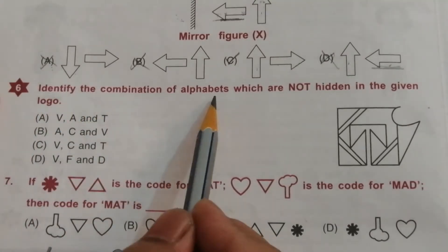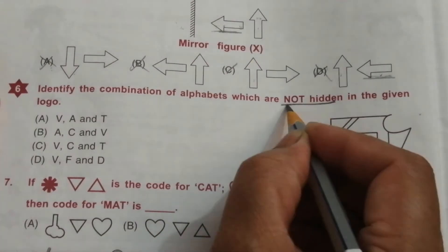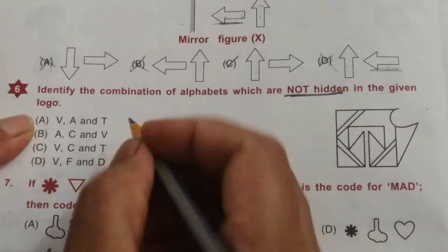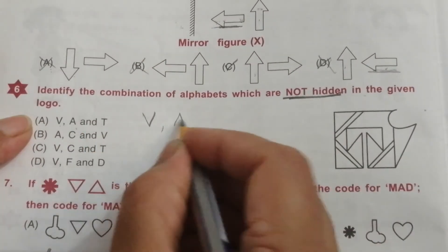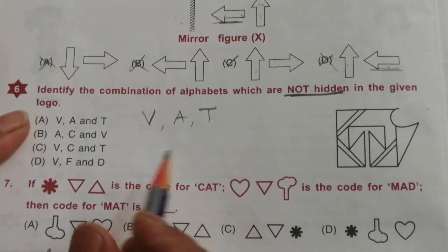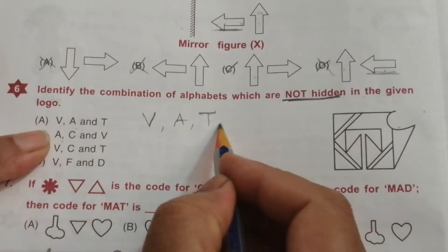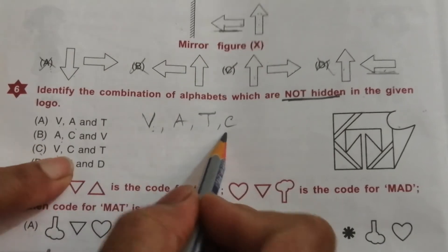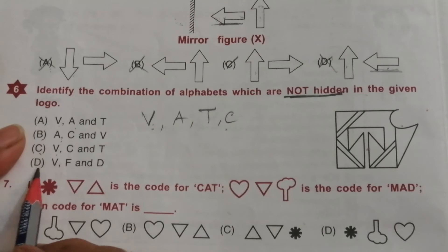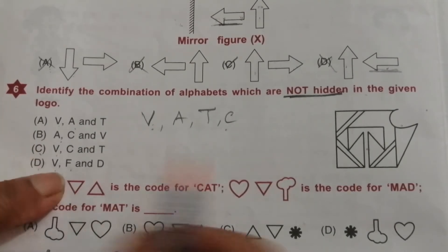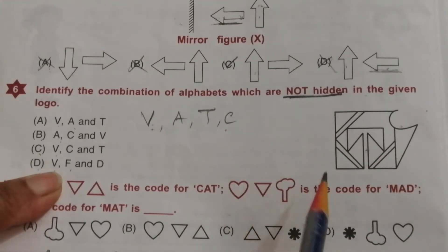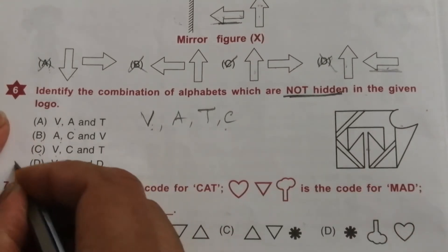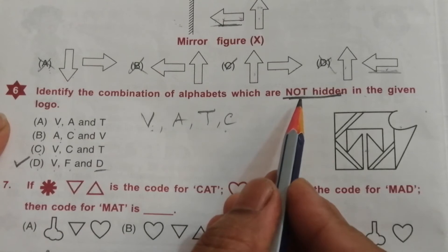Problem 6: identify the combination of alphabets which are not hidden in the given logo. Option A: V is here, A is here, T is here. Option B: A, C, and V are also there. Option C: C, V, S, and T are present. Option D: V and F — there is no F in this figure, and D is also not present. So D is the correct answer, because they are asking us to find what is not hidden.